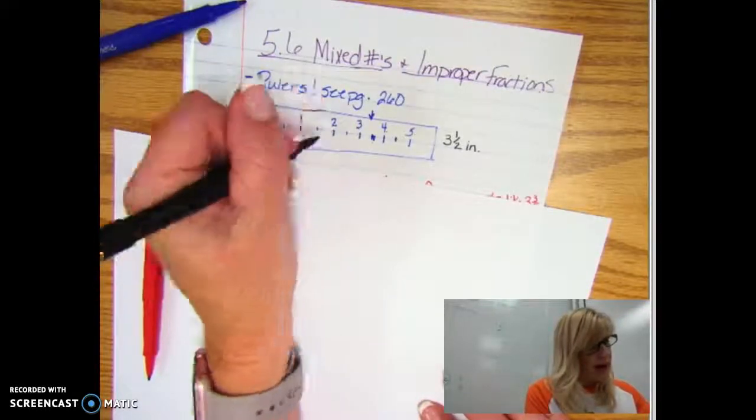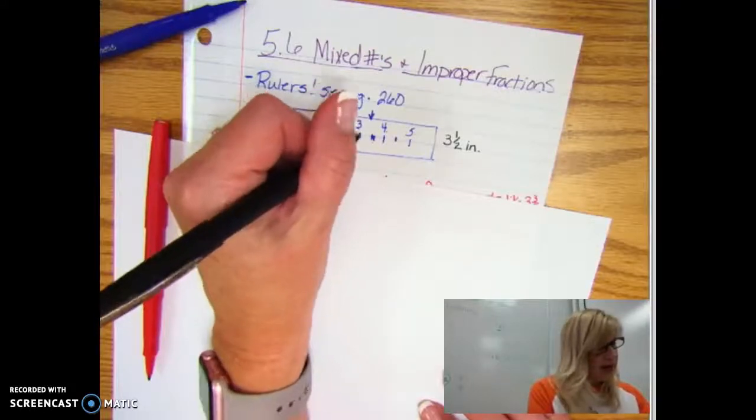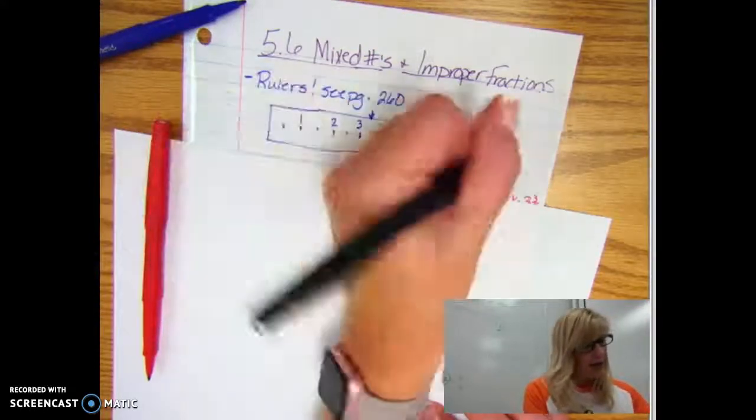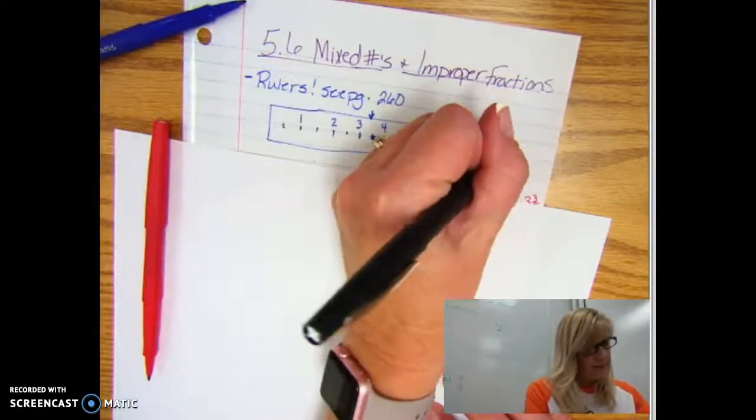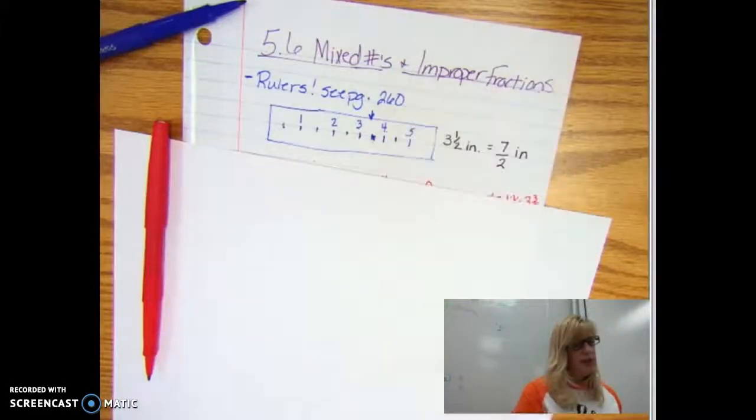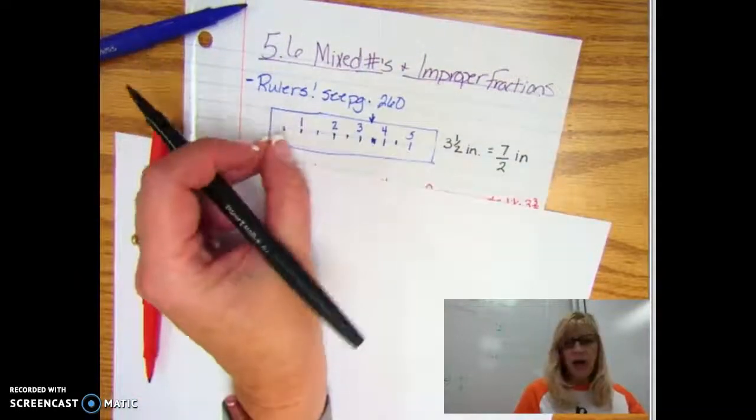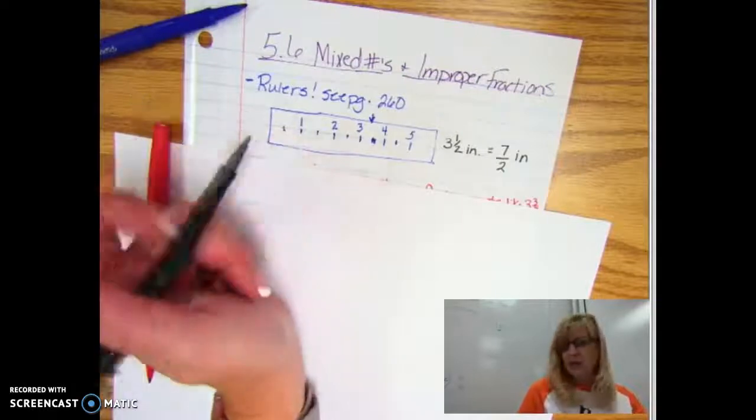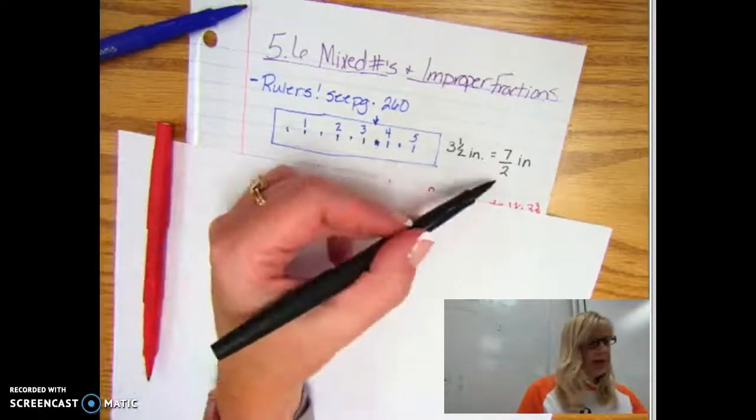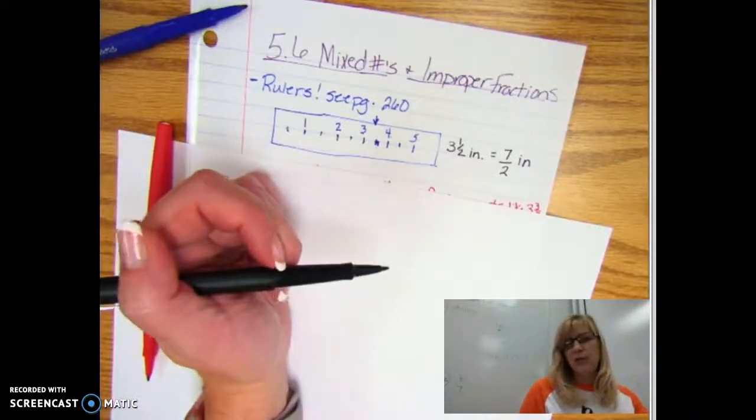So I'm going to say here's one half, two halves, three halves, four halves, five halves, six halves, seven halves. So I'm talking about the same amount, it's just in this one they're all cut already into one half inch pieces, but I know that's the same amount as three and one half.